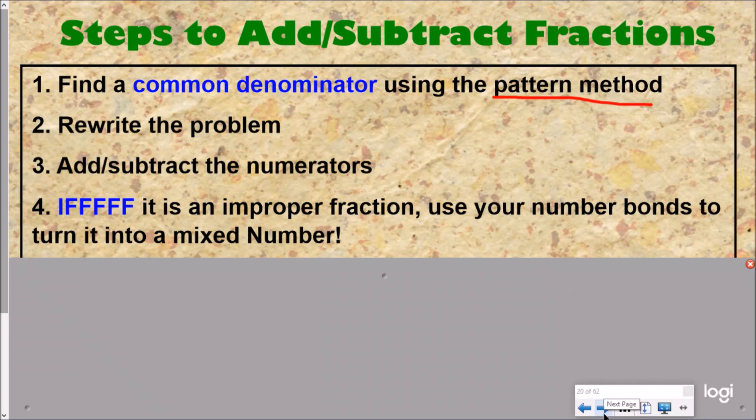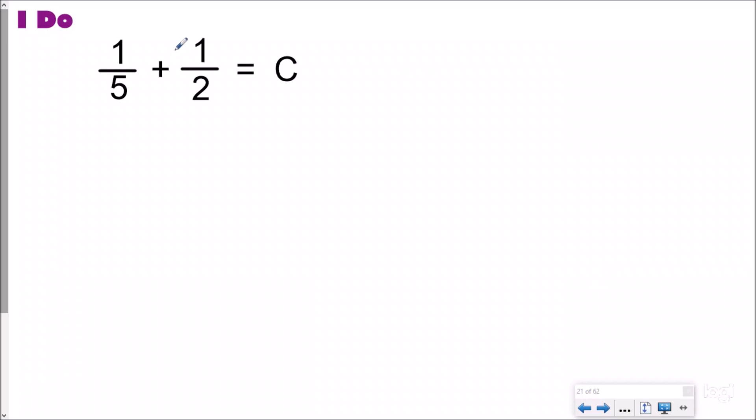Let's look at how we can use these steps to help us. One-fifth plus one-half equals C. Not a real dinosaur. Dr. Bones made that up. So we have one-fifth plus one-half, but I cannot add these because my number one rule of fractions says my denominators have to be the same.